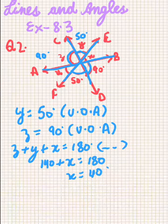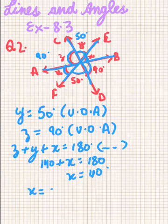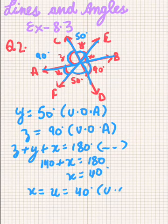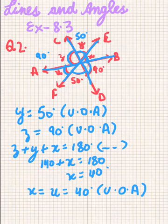From here, x equals 40 degrees. Now, x and u are also vertically opposite angles, so they are equal, and hence we get all the values of the answer for Question 2.